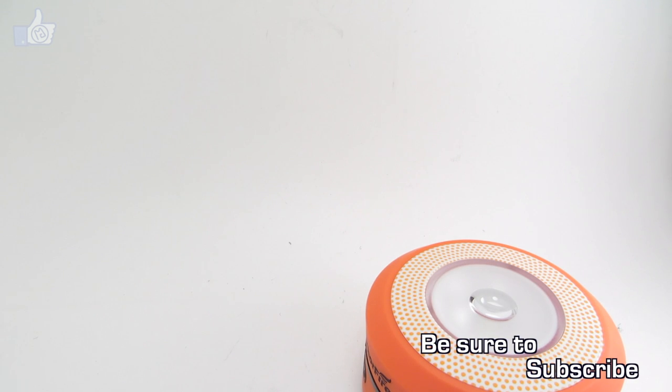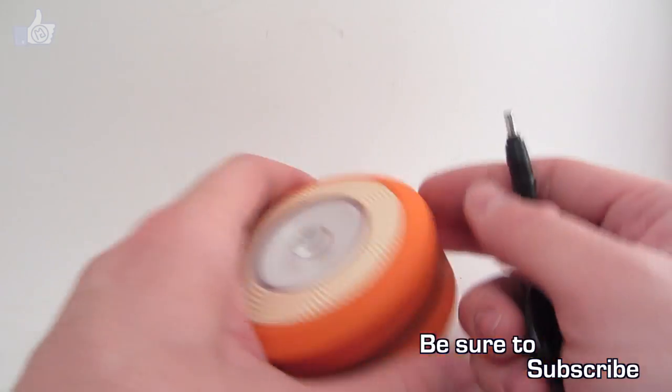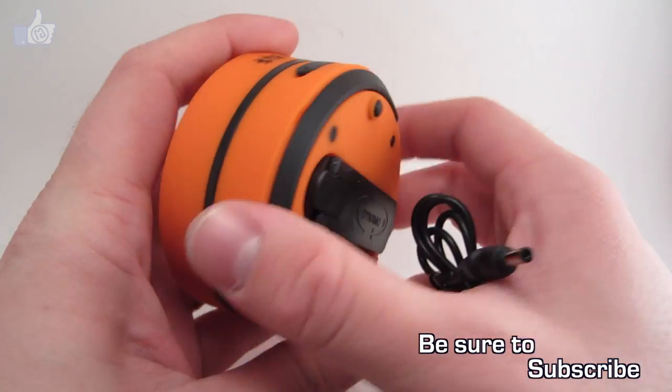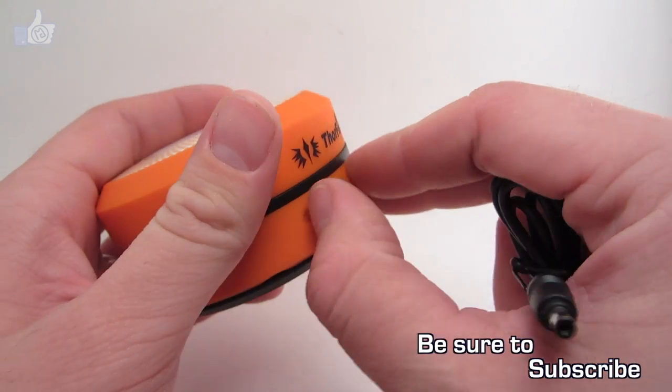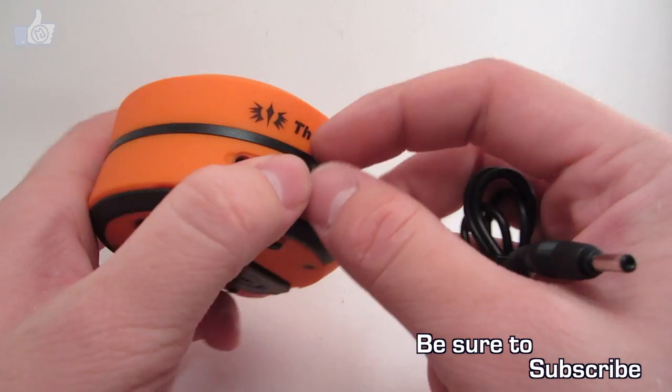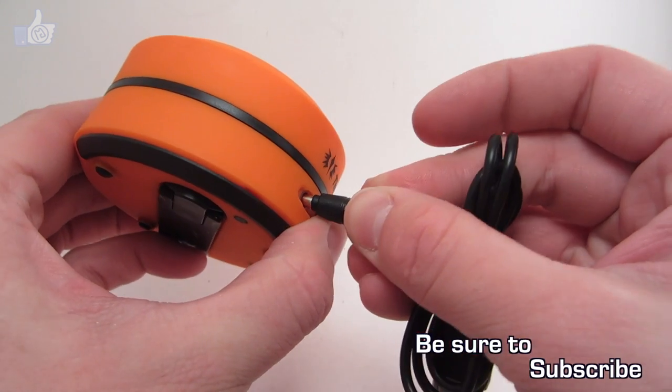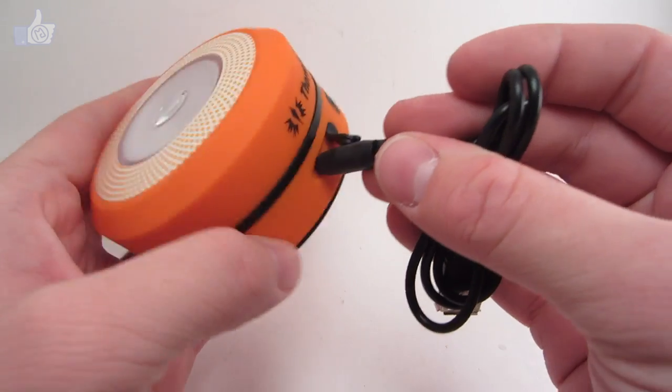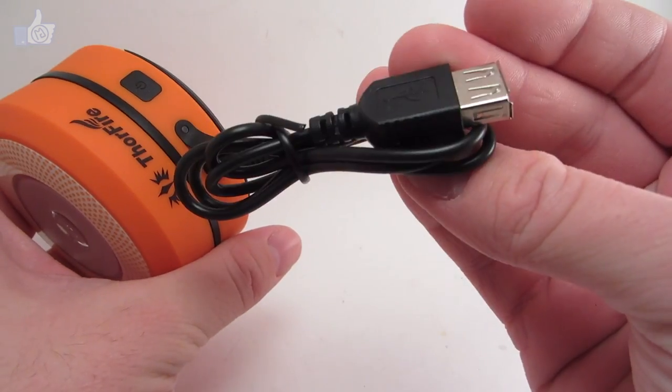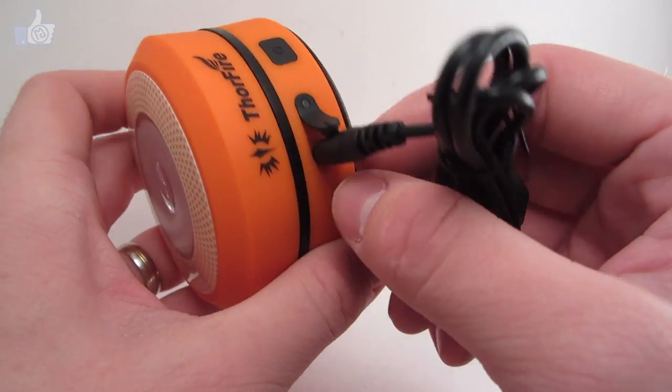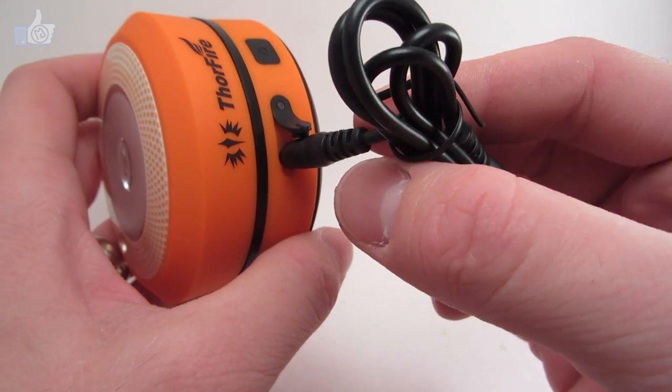Before I put the cord away, I'll just show you how this works here. When you want to charge up the flashlight, it's got a battery built in, a rechargeable battery. You can plug that in right there and plug the other end into your computer or whatever you like. And the little red indicator light will light up to let you know that it's charging.